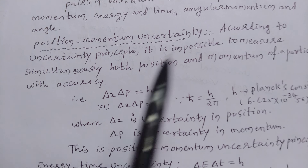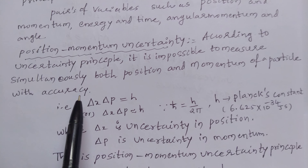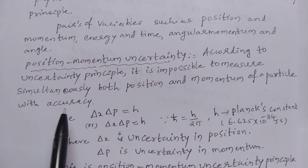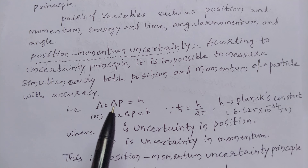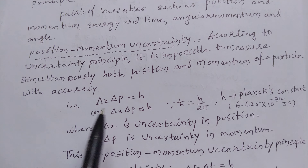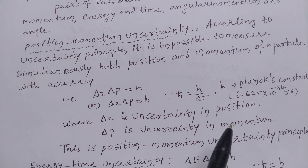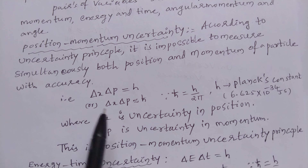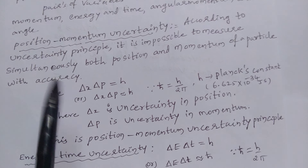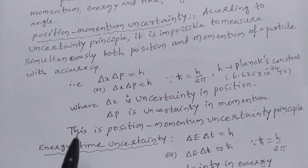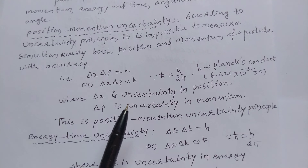According to the Uncertainty Principle, it is impossible to measure simultaneously both position and momentum of a particle with accuracy. That is, delta x into delta p is equal to h. Here, delta x is uncertainty in position and delta p is uncertainty in momentum. The product of these two variables gives a certain limit that must equal Planck's constant. This is the Position-Momentum Uncertainty Principle.